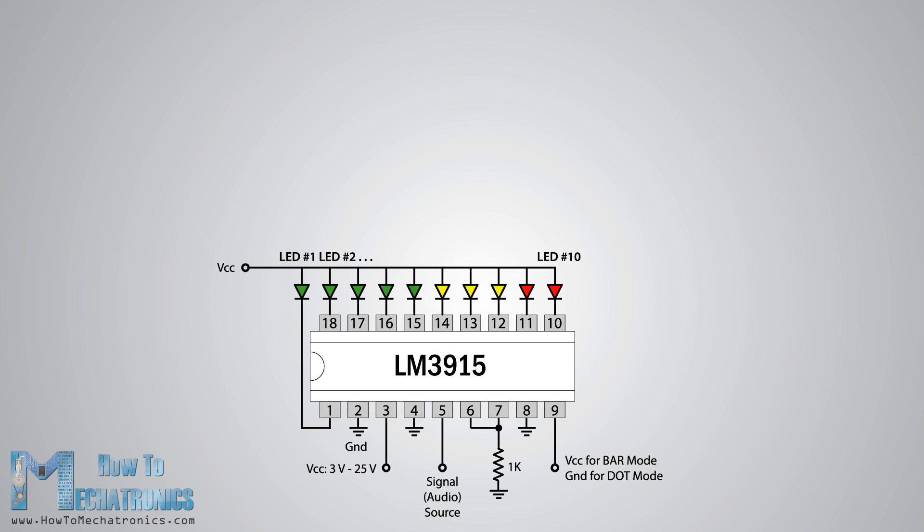The analog signal goes into pin number 5. The pins from 6 to 8 are used for adjusting the voltage reference or the sensing and pin 9 is used for selecting bar or dot mode.